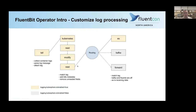A user can customize the log processing phases by choosing different plugins for different phases. For example, for the output phase, if you have ES, Kafka, and the forward plugin, you can enable just the ES plugin by setting the label — for example, enable to true — and disable the other plugins. This way you can keep the configuration for Kafka and forward without deleting them, and enable them again whenever needed. It's very flexible, and the same applies to input and filter plugins.